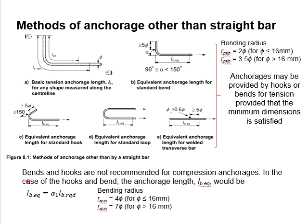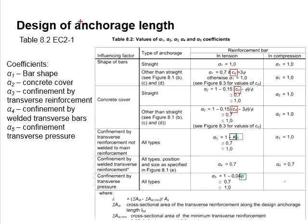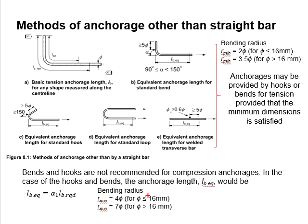Bends and hooks are not recommended for compression anchorage. However, if hooks or bends are used in compression, the anchorage length is governed only by alpha 1, which refers to the shape of the reinforcement bar. The minimum bending radius for compression is double that required under tension conditions.